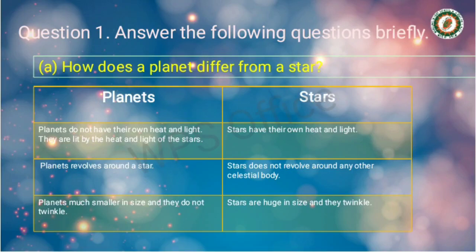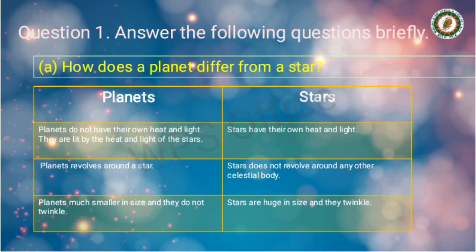Planets point number two: a planet revolves around a star. In the column of stars, point number two: stars do not revolve around any other celestial body. Planets point number three: planets are much smaller in size and they do not twinkle. Stars point number three: stars are huge in size and they twinkle. That's all from question 1a — how does a planet differ from a star.